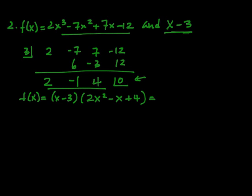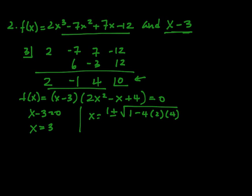If you set this equal to 0, we can split. So we have x minus 3 equals 0, so x equals 3, and then x equals 1 plus or minus the square root of 1 minus 4 times 2 times 4, over 2 times 2.